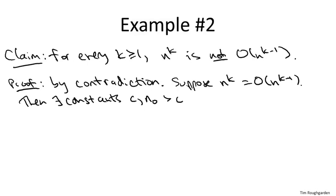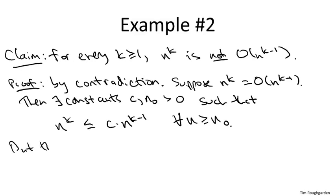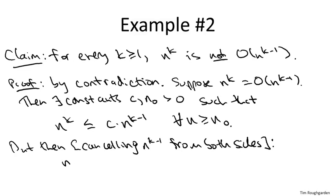Such that for all sufficiently large n, we have a constant multiple C times n^(k-1) upper bounding n^k. From this, we need to derive something which is patently false. The easiest way to do that is to cancel n^(k-1) from both sides of this inequality. Since n is at least one and k is at least one, it's legitimate to cancel this n^(k-1) from both sides. And when we do that, we get the assertion that n is at most some constant C for all n at least N₀.